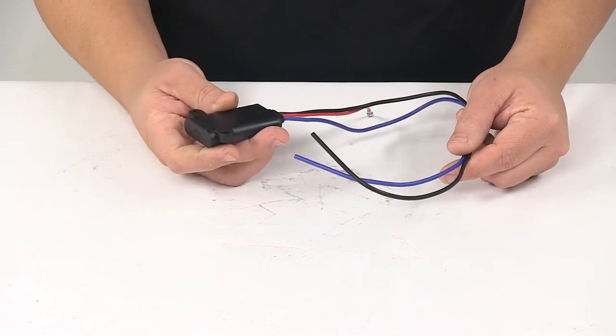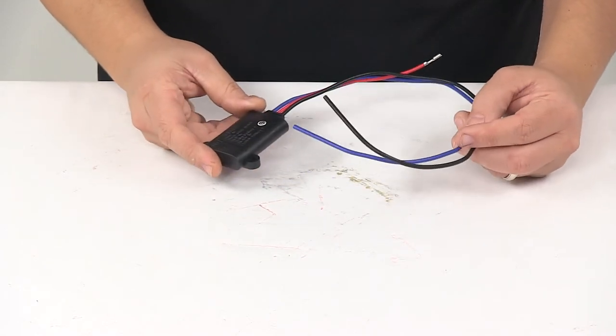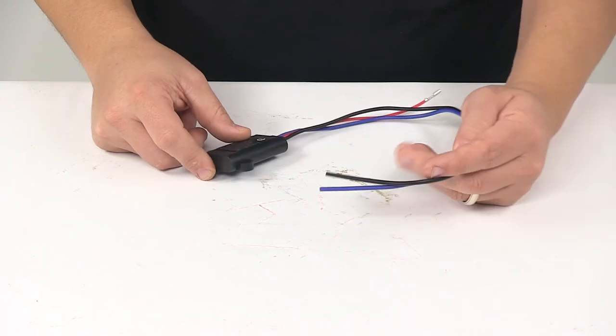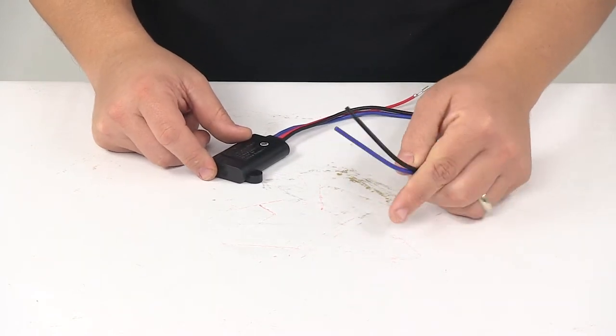This can be added to a trailer breakaway kit that did not originally come with a battery charger, and it has hard wires to your vehicle's power source and to the battery in your breakaway kit.